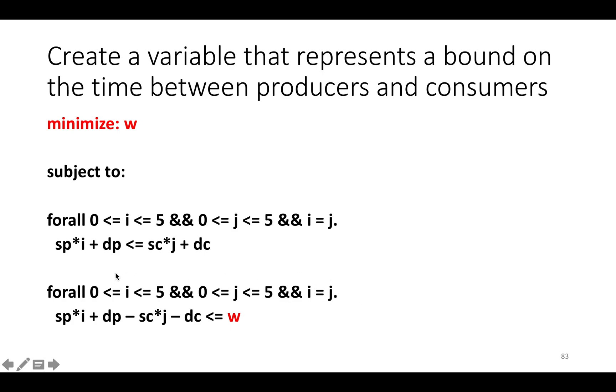Now we're going to add a new constraint which says for all values of i and j where statement i sends data to statement j, w, which is this fresh variable, bounds the difference between the time when i and j happen. Basically what we're saying here is this new w is actually what's called a uniform bound on the time between production and consumption of values. So w intuitively, when we hit solve, when we convert all these universally quantified constraints and integer constraints and we minimize w, w is going to be the longest time between the production of a value and its consumption.